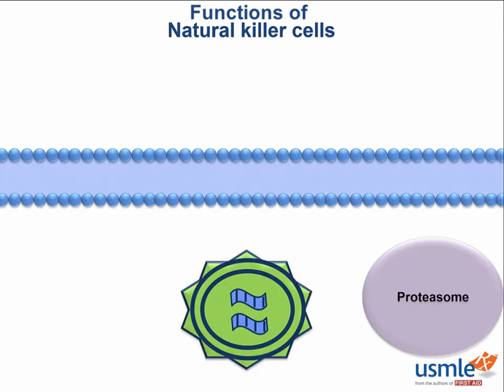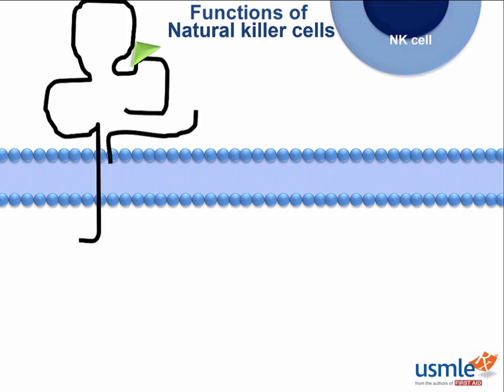Here is a virally infected cell. Recall from the MHC discussion how fragments of viruses are loaded onto MHC-1 receptors and fastened to the surface. This is where natural killer cells come into play. They take a look at the receptor to see if the cell is infected or not. If the cell is infected, the immune cells need to induce apoptosis to make sure the virus can't proliferate and infect other cells.